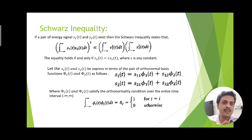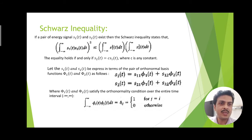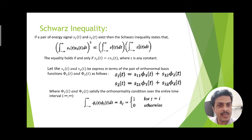S1(t) and S2(t) can be represented in terms of basis functions, which represent the carrier signal in digital communication. Here φ1(t) and φ2(t) are two basis functions, with coefficients S11, S12, S21, and S22. Using these coefficients and basis functions, we can represent the signals S1(t) and S2(t). To satisfy the Schwarz inequality, φ1(t) and φ2(t) must satisfy the orthonormality condition: the square of the same basis function integrated must equal 1, meaning the energy of the carrier or basis function equals 1.